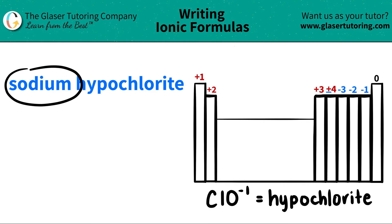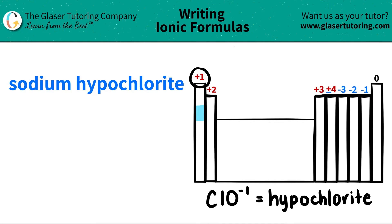Sodium is a metal, and if we just look at where sodium is on the periodic table, it's right here. Sodium is Na, and it's always in the plus one charge. So sodium is always Na, and it always has a plus one charge because it's in group one.